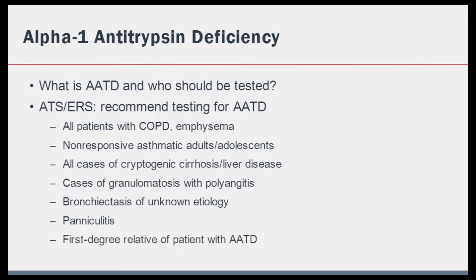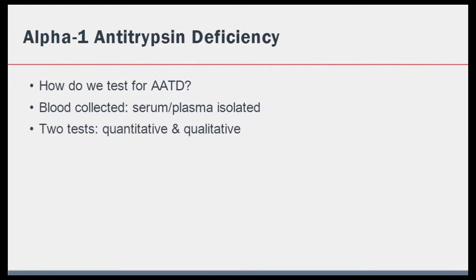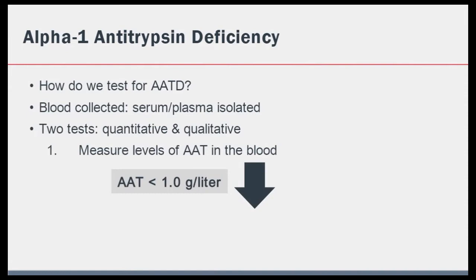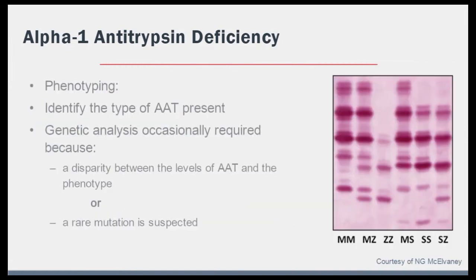How do we diagnose alpha-1 antitrypsin deficiency? We do so by using blood testing. Two tests are performed. Firstly, the level of alpha-1 antitrypsin is measured, and if this is below one gram per liter, then further analysis of the phenotype should be checked. Through isoelectric focusing, we can identify the type of alpha-1 antitrypsin protein present in the blood. If there is a disparity between alpha-1 antitrypsin levels and a phenotype, or in the case of a rare isoelectric focusing pattern, then genetic analysis may be required to determine the deficiency state of the individual.